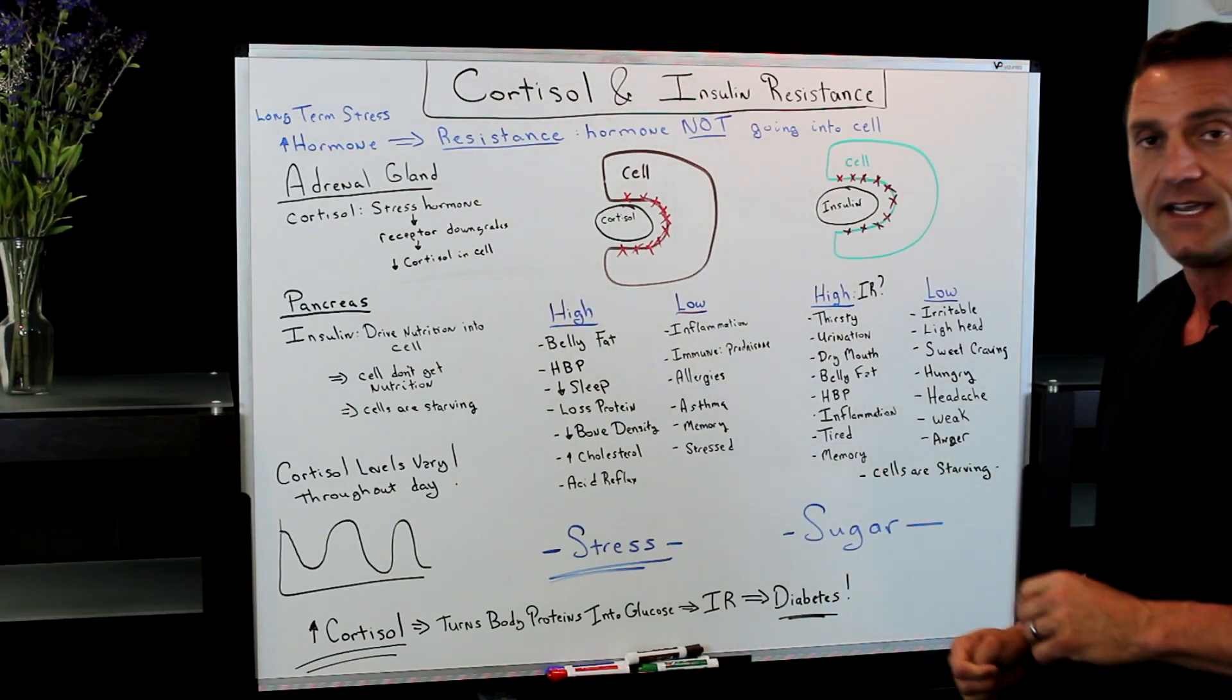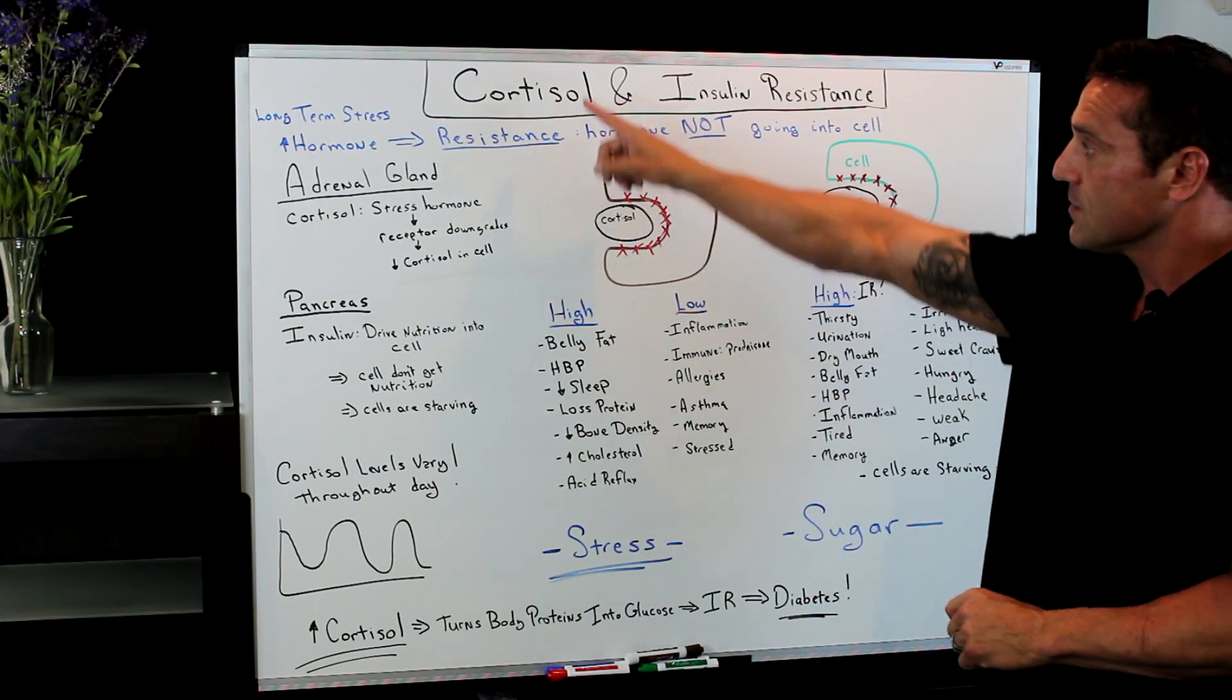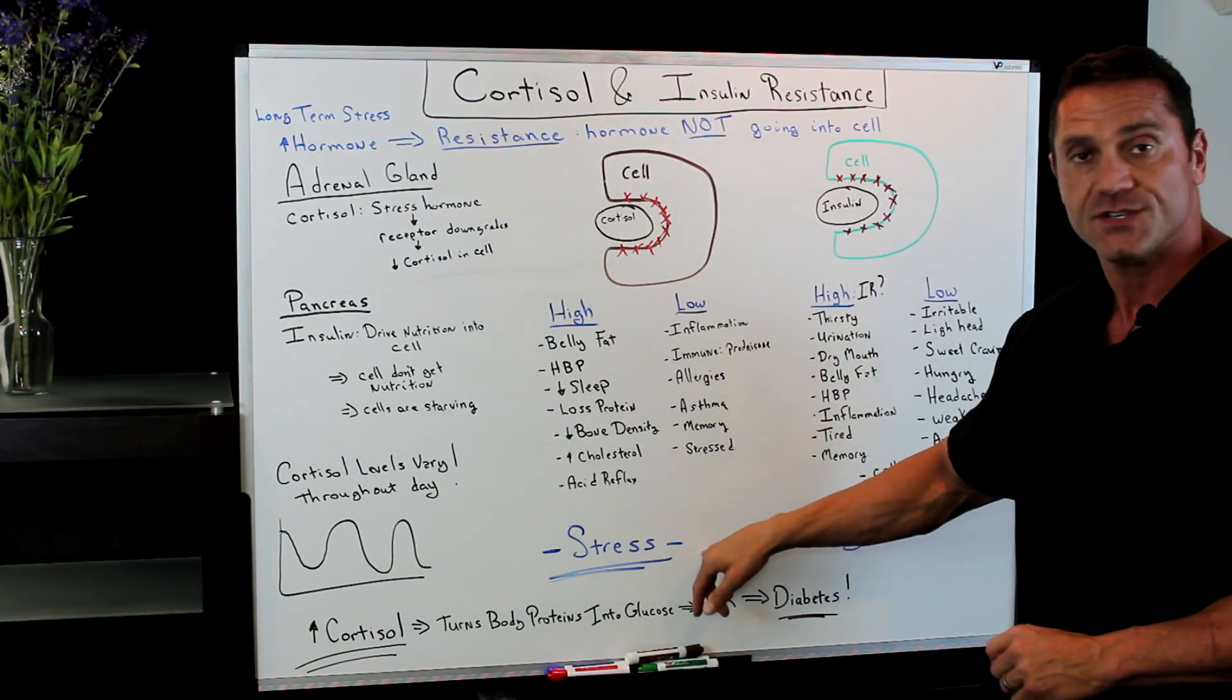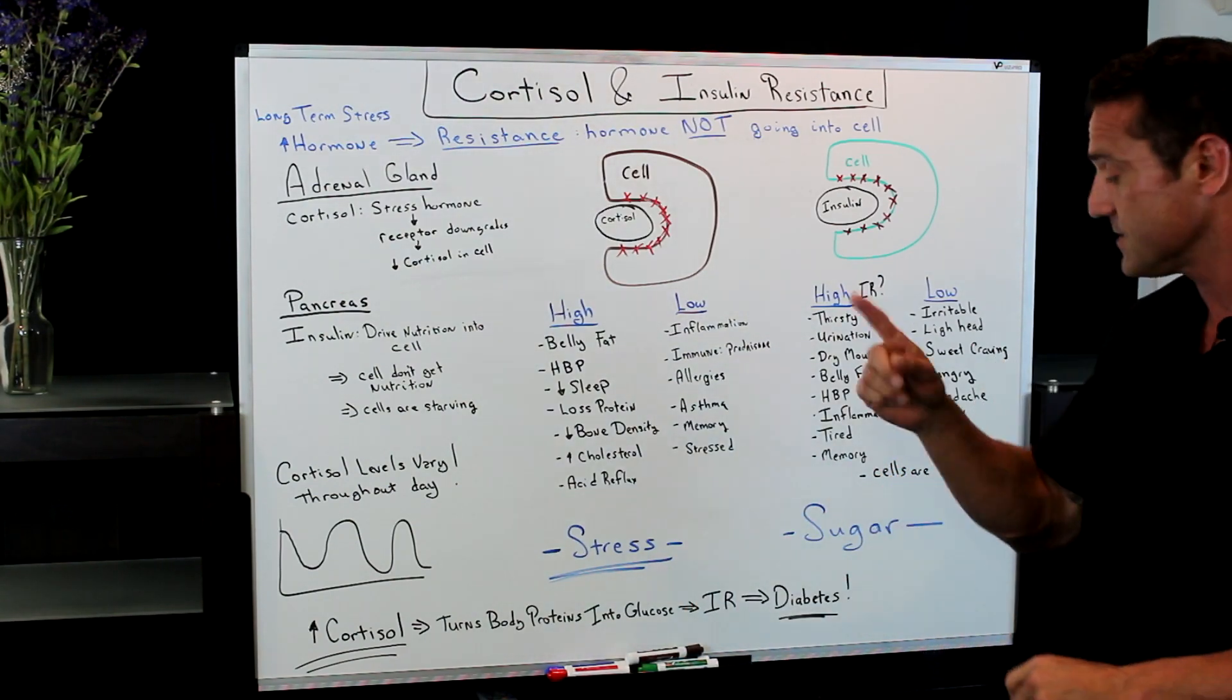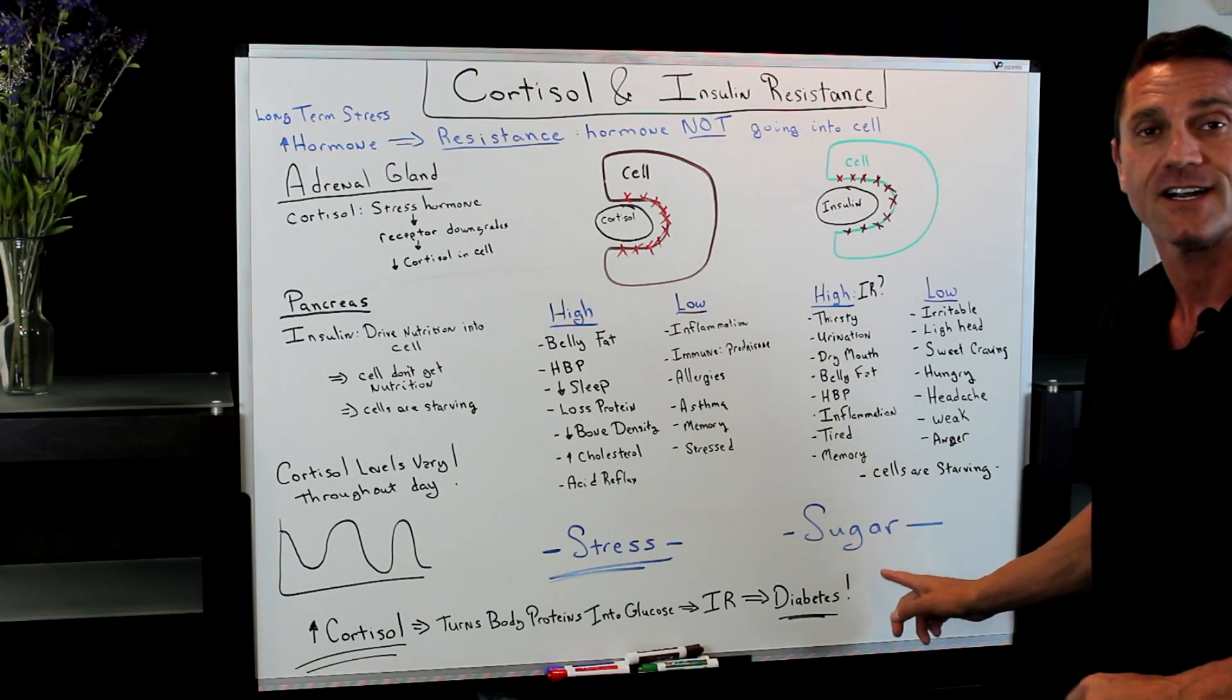As you can see here, what triggers it? Cortisol resistance is due to stress. Too much stress will cause cortisol resistance. What causes insulin resistance? Sugar.